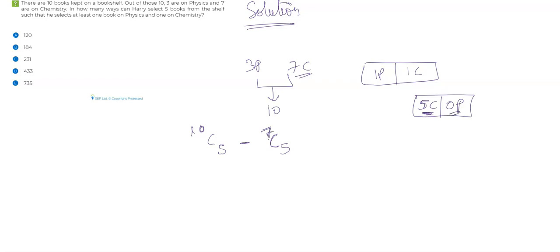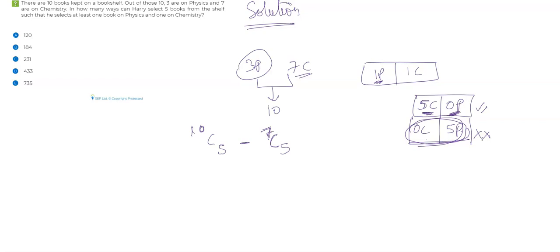In the unwanted case, you have 0 physics but you want at least 1 physics. Now ask yourself: is the other unwanted case — 0 chemistry and 5 physics — even possible? It is not possible because you don't have 5 physics books, so this case will never occur. So when you are choosing 5 books out of 10, there's only one scenario you don't want. Whenever you have many favorable cases and very few unfavorable cases, it makes sense to find the unfavorable ones and remove them to get the answer.